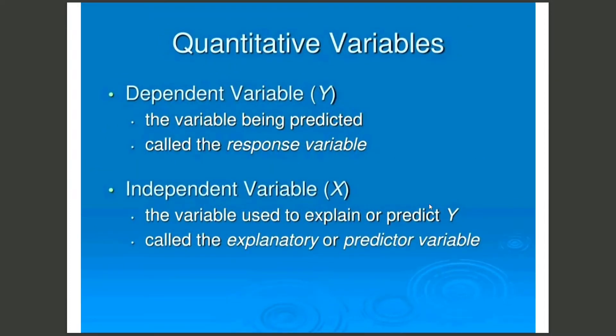Quantitative variables: There are two types of variables, one is dependent variable and another is independent variable. Firstly, dependent variable - the variable being predicted, called the response variable. And independent variable - the variable used to explain or predict Y, called the explanatory or predictor variable.